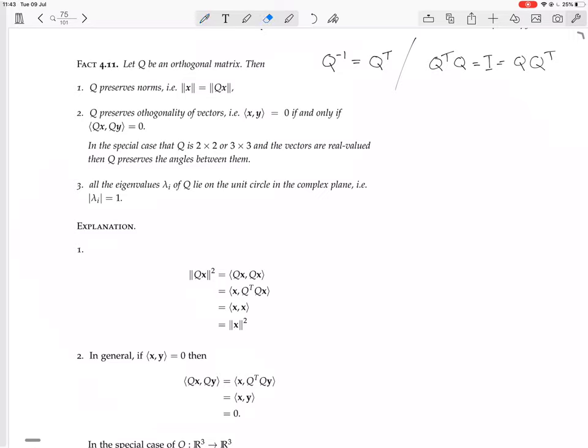So if Q is such a matrix, an orthogonal matrix, then Q preserves norms, i.e. the norm of X is the same as the norm of QX. That's like saying it doesn't change the size of the length of the vector X.